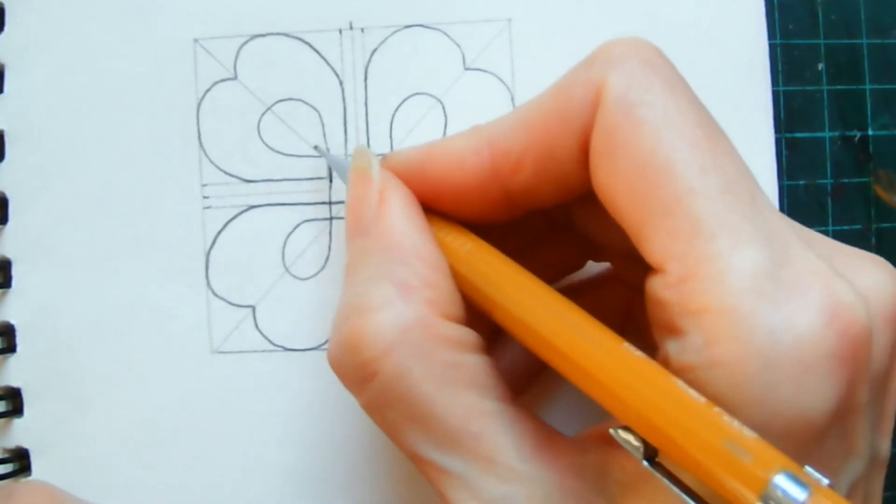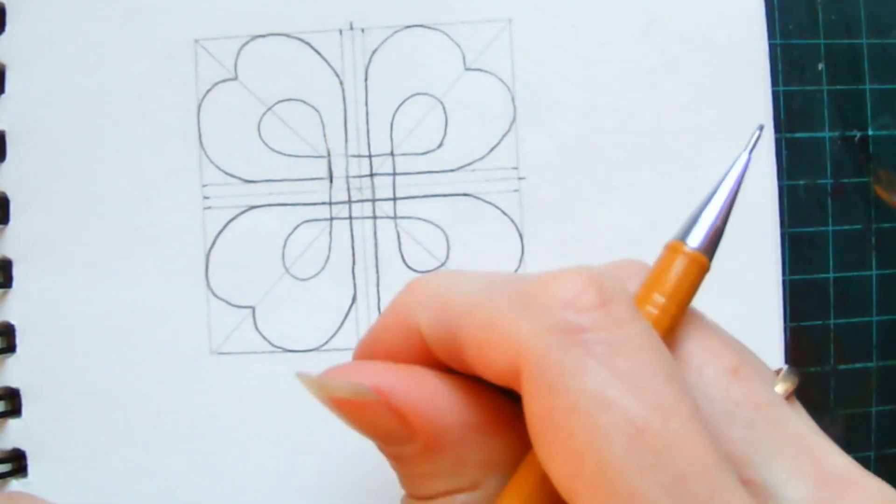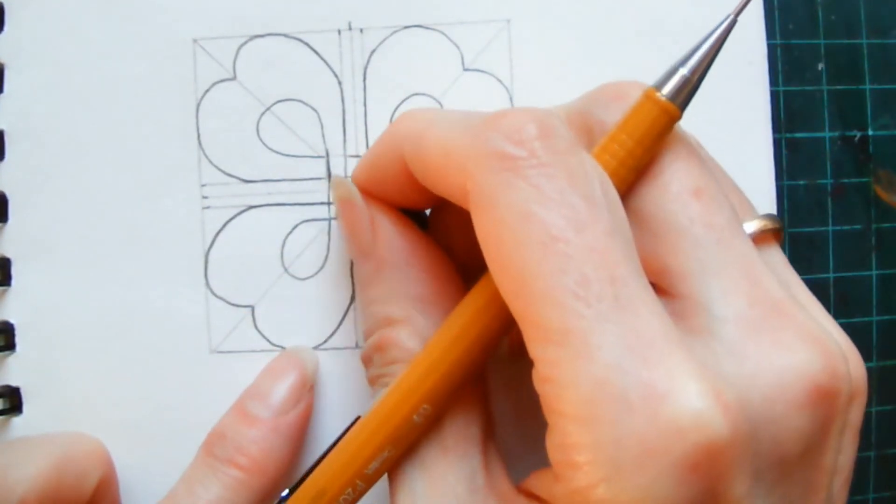Which means as you work your way around, that one goes over, so it's got to go under this one. So I'm going to rub out these two lines.